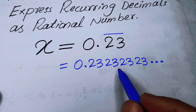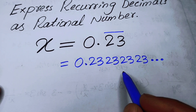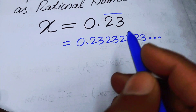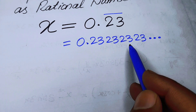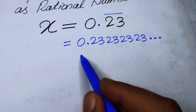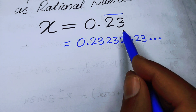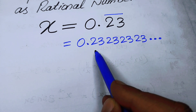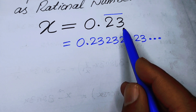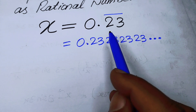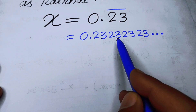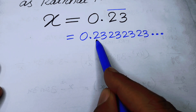This decimal is named a recurring decimal. Now to convert it to a rational number, remember: if you have a two-digit number repeated indefinitely, multiply both sides by 100; if one digit, multiply by 10; if three digits, multiply by 1000. Here, 23 is repeated, so since it is a two-digit number, we multiply both sides by 100.